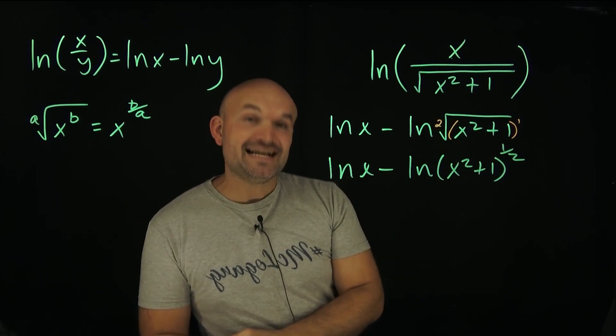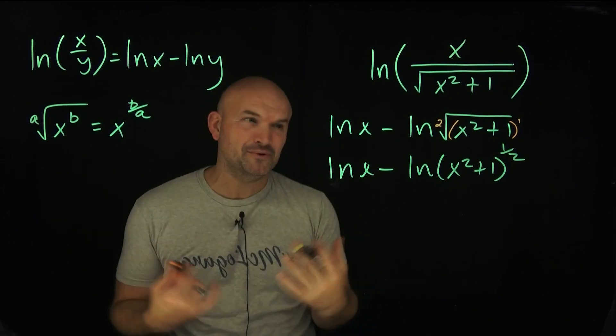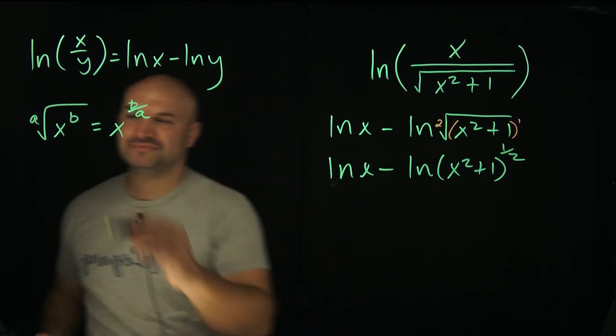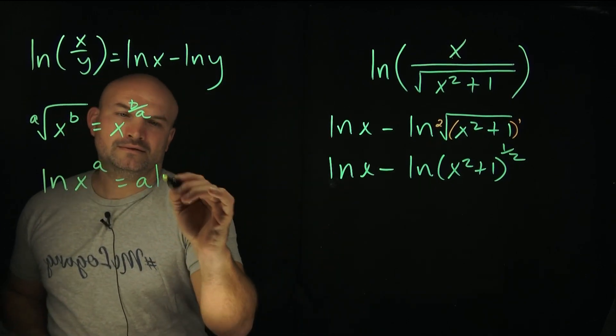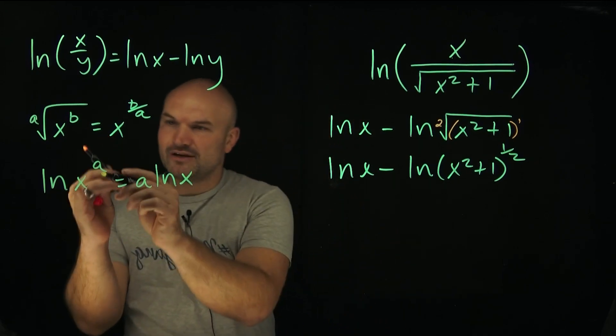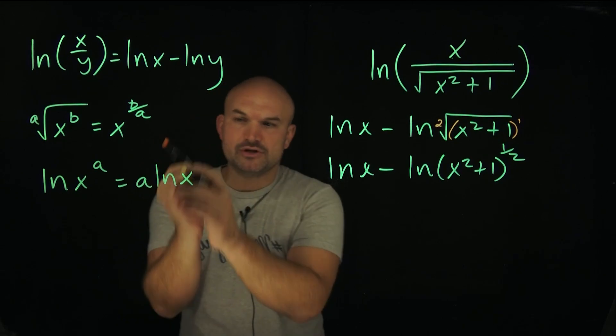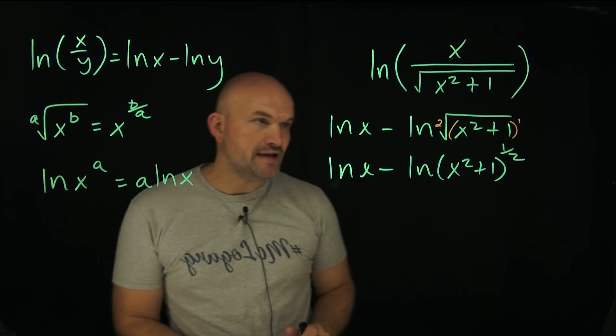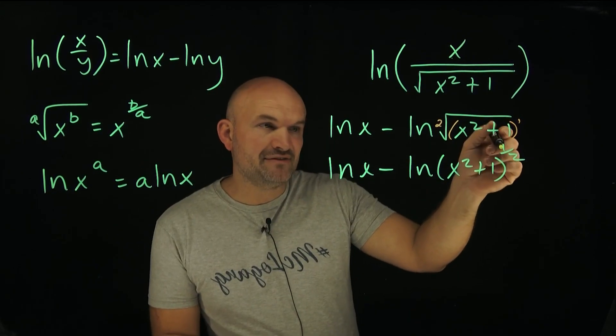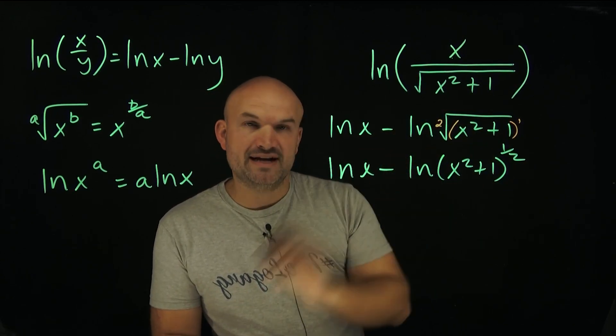Now, the last step that I can do for expansion is to use what I call the power rule—not what I call it, it's not my rule, it's the power rule. And the variables, it doesn't really matter. Whenever you have an argument raised to a power, you can rewrite that in front as a product times your logarithm of that argument. So what you can see here is I can take this one-half and rewrite it as a product times the ln of x squared plus 1.